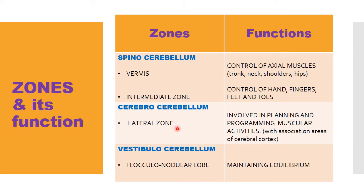The cerebrocerebellum, also called the lateral zone, is involved in planning and programming muscular activities in association with areas of the cerebral cortex. It helps the cerebral cortex control and plan the activities of the muscles. The vestibular cerebellum, or flocculonodular lobe, maintains equilibrium.